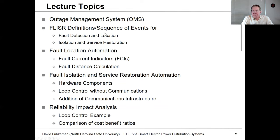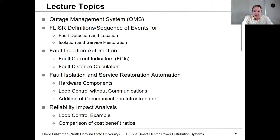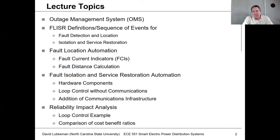I want to go back and talk about the FLISR steps in a little more detail. We'll cover what's involved in fault detection and location, and what we could do to automate that. Then we'll look at isolation and service restoration in both non-automated and automated systems. Then we'll get into more specific hardware solutions — fault current indicators, distance calculations, and the hardware required for fault isolation and service restoration. The common schemes used today are usually on what we call loop systems.